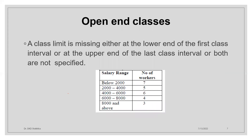Next is the open-end classes. A class limit is missing — if a class limit is missing either at the lower end of the first class interval or at the upper end of the last class interval. This is the first class interval and this is the last class interval, and if both are not specified with an exact value, we write 'below 2000' — 7 workers are getting salary below 2000 — and '8000 and above' — 3 workers getting salary 8000 and above. This comes under the open-end classes.